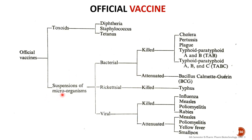For attenuated bacterial suspension, there is only one conventional official vaccine: BCG — Bacillus Calmette-Guérin. For rickettsial suspension, only the killed form is available; typhus vaccine is an example of a rickettsial vaccine.